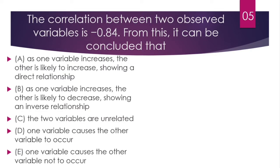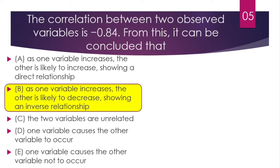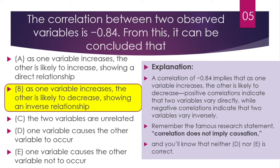Question 5 involves correlation. As one variable increases, the other is likely to decrease — that describes a negative correlation. Positive correlation indicates that two variables vary directly, while negative correlation indicates that two variables vary inversely. Remember the famous research statement: correlation does not imply causation. Neither choice D nor E is correct — both contain misstatements.